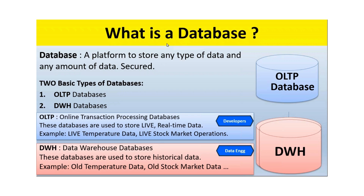These are relational databases where data is stored in columns and rows. A relation means a link between one table and another. For example, in a restaurant, the orders table depends on the menu table. Or consider flights and reservations — the reservation table depends on the flight table. That kind of connection is called a relation.